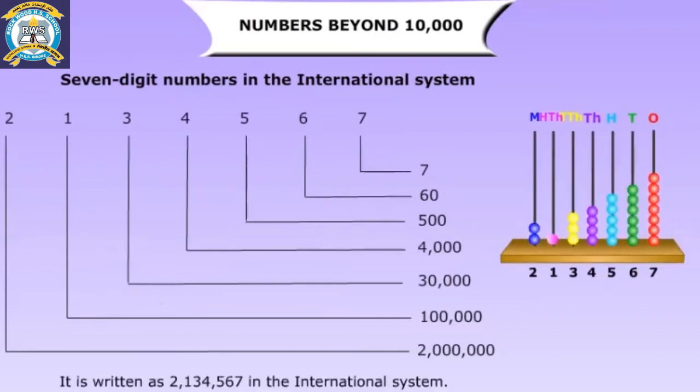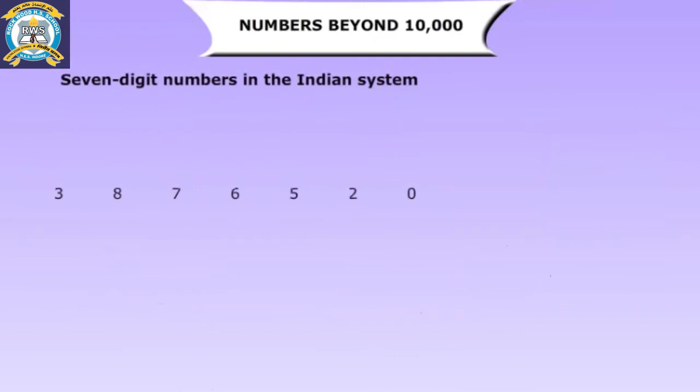The number is written as two comma one three four comma five six seven in the international system. The number name is two million, one hundred thirty-four thousand, five hundred sixty-seven.